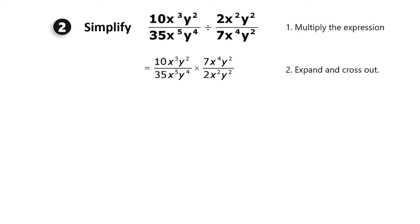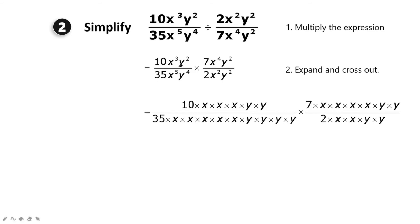The next step is to expand and cross out. To make simplification easier, we expand all terms. So 10x³y² becomes 10·x·x·x·y·y; 35x⁵y⁴ becomes 35·x·x·x·x·x·y·y·y·y; 7x⁴y² becomes 7·x·x·x·x·y·y; and 2x²y² becomes 2·x·x·y·y.